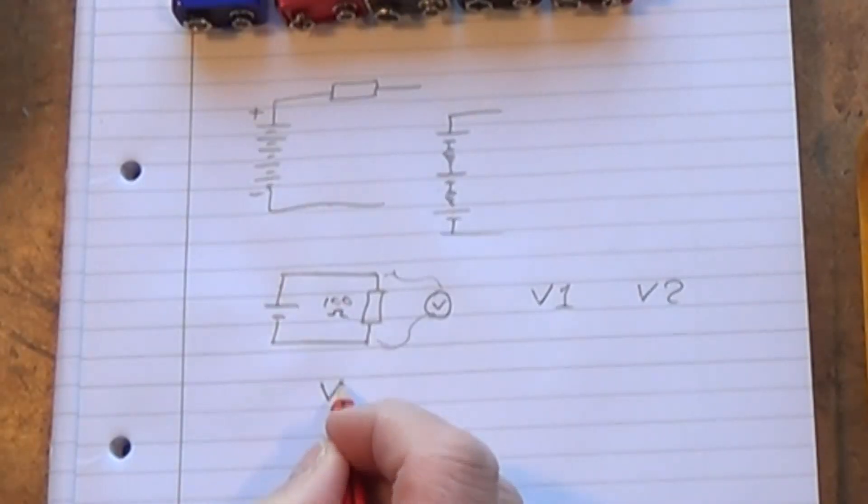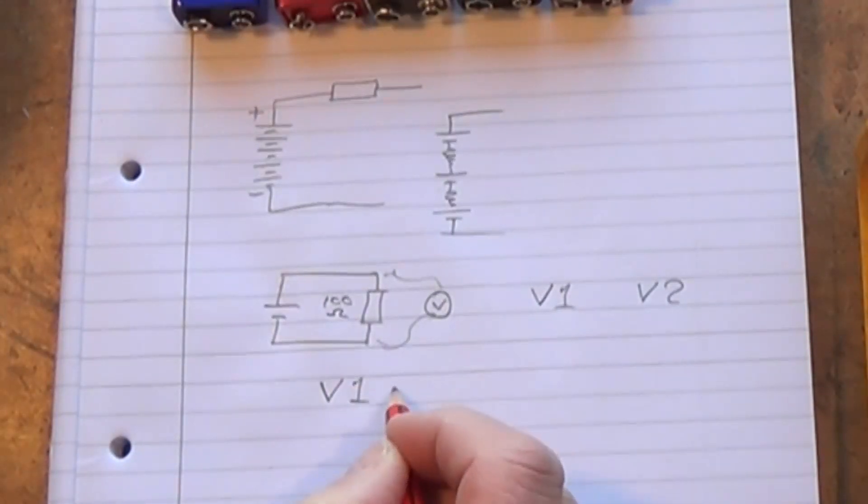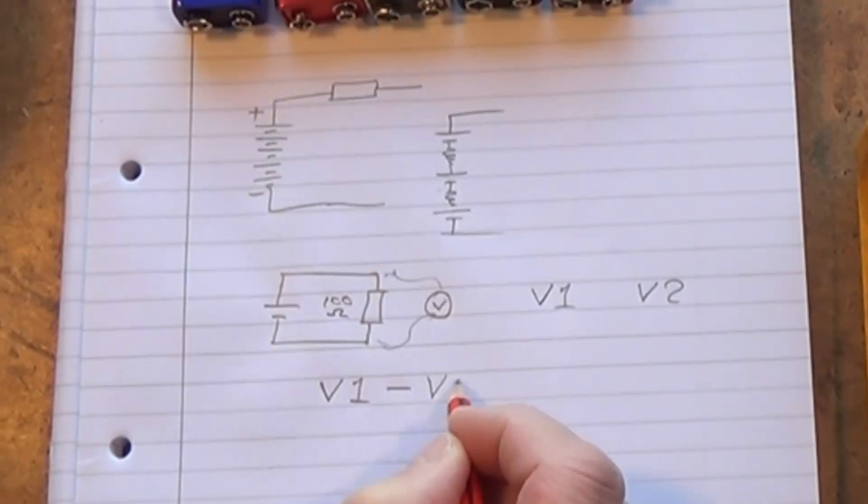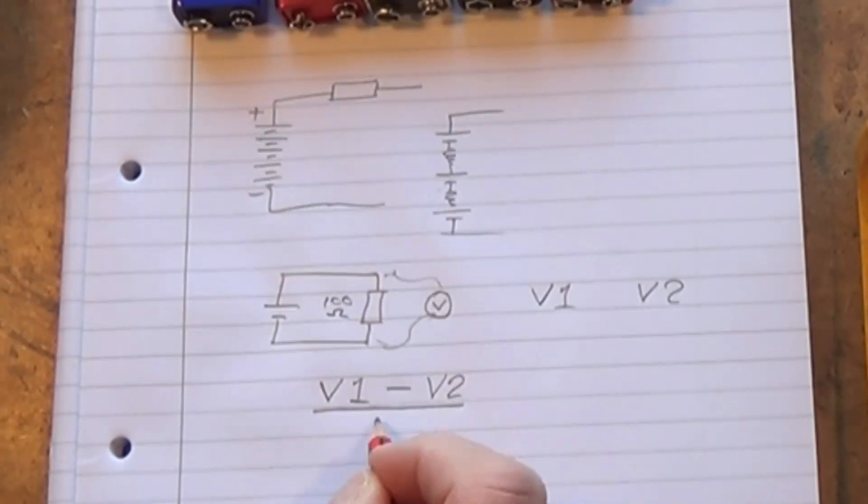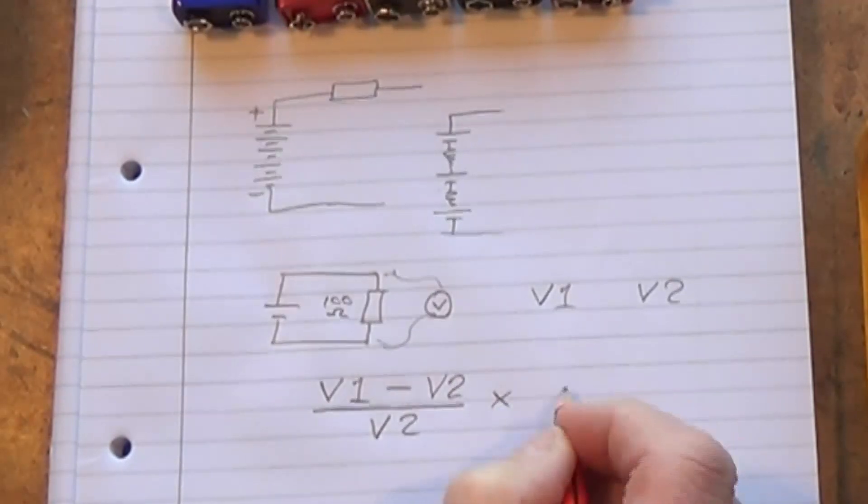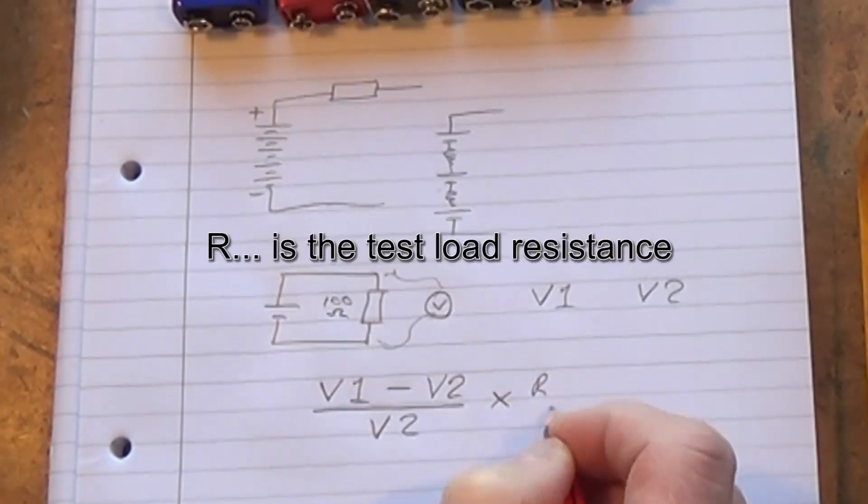So what you can do then is you take the V1 value minus the V2 value, divide that by V2, and then multiply that answer by the resistance.